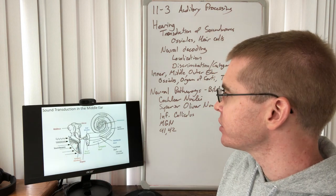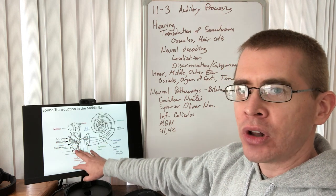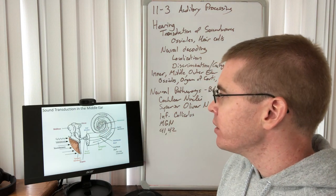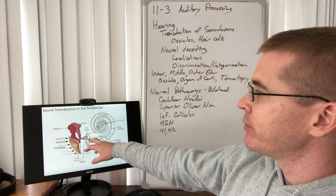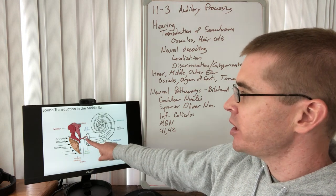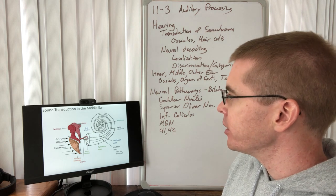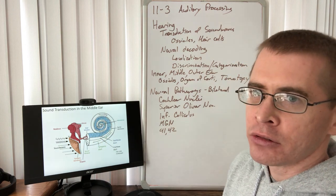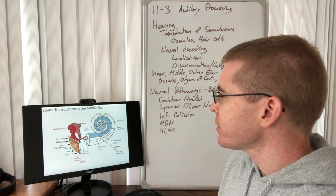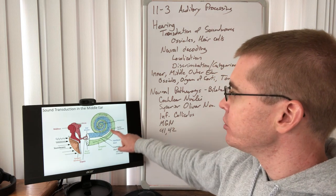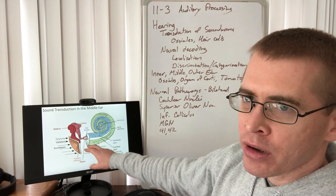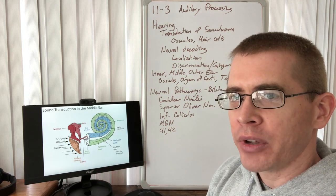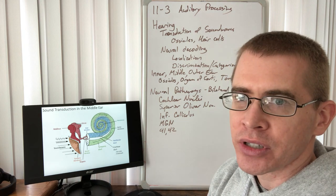Sound waves hit the tympanic membrane and cause it to move in various patterns. That movement is propagated through the hammer, anvil, and stirrup — the stapes — which is located in the oval window of the cochlea. Those sound waves get transmitted through the fluid of the vestibular duct through the spiral cochlea, then get transmitted back through the tympanic duct. A small round window with connective tissue over it dampens that sound wave propagation so that new sound waves can propagate at different frequencies.